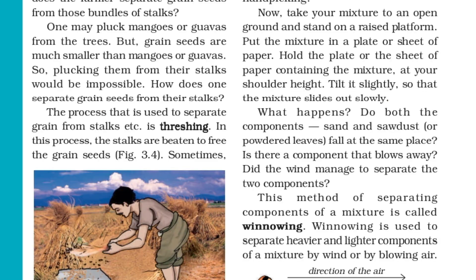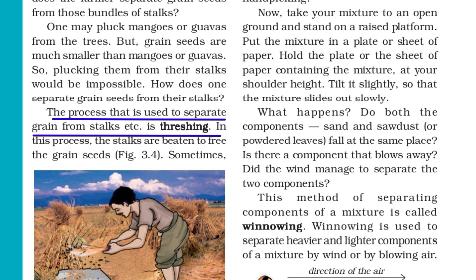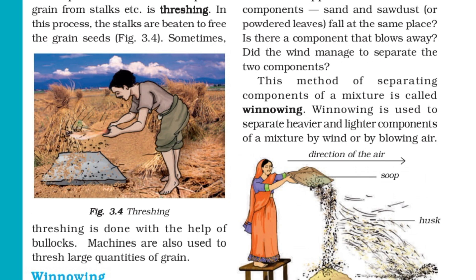The next method is threshing. The process used to separate grain from stalks is threshing. In this process, the stalks are beaten to free the grain seeds. Sometimes threshing is done with the help of bullocks. Machines are also used to thresh large quantities of grain.